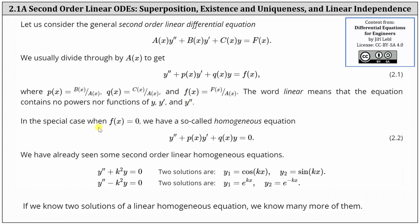In this special case, when f(x) on the right is equal to zero, we have a homogeneous equation. We'll call this equation 2.2.